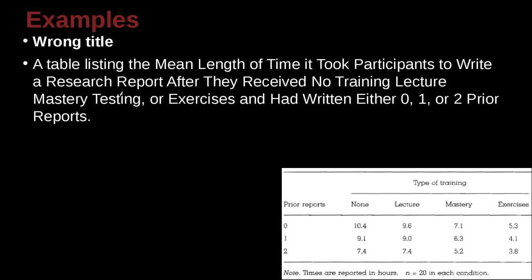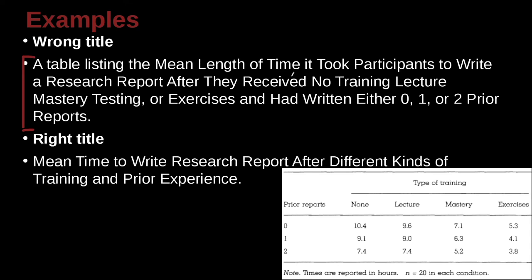Okay, let's go ahead and look at some example table title examples, and here is a very long title. A table listing the mean length of time it took participants to write a research report after they received no training, lecture, mastery, testing, or exercise, and had written either 0, 1, or 2 prior reports. Oh man, that is basically here. The person is trying to explain everything that's inside that table. That's everything that's inside that table. What would be a better way to write that title?